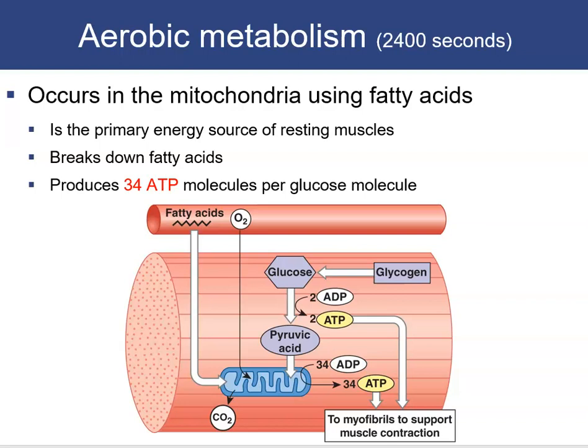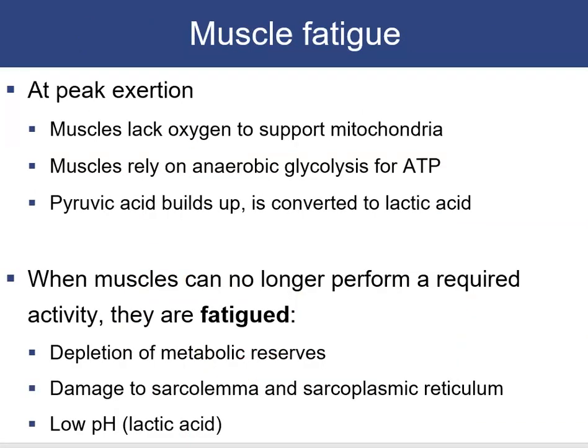Muscles can switch between these ATP-generating processes. At peak exertion, muscles lack the oxygen for aerobic respiration and rely on anaerobic glycolysis. Pyruvic acid builds up and is converted to lactic acid. When muscles can no longer perform the required activity, they are fatigued — depleted of glycogen and ATP. Severe fatigue can damage the sarcolemma and sarcoplasmic reticulum due to the low pH generated by lactic acid.